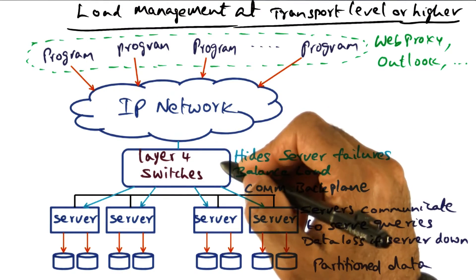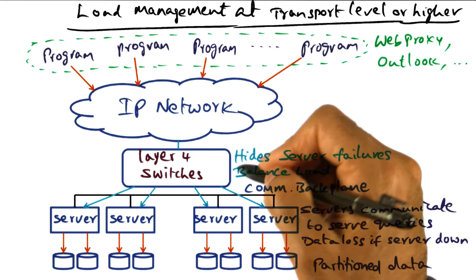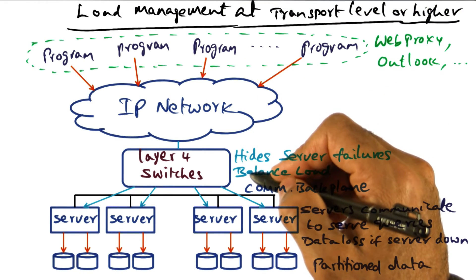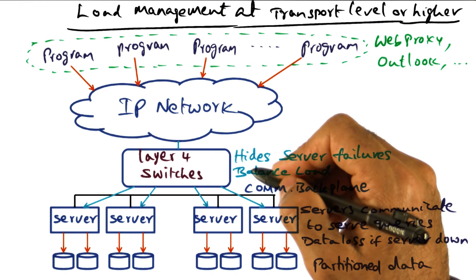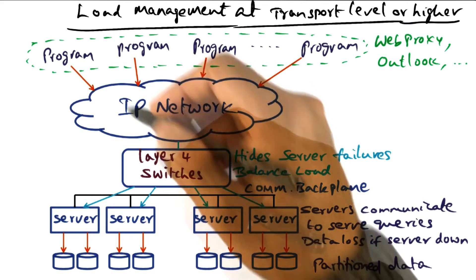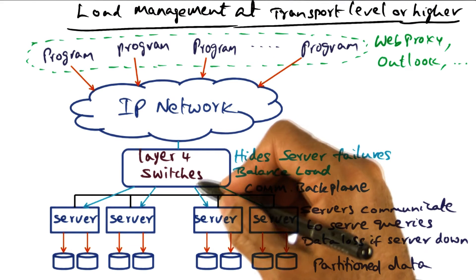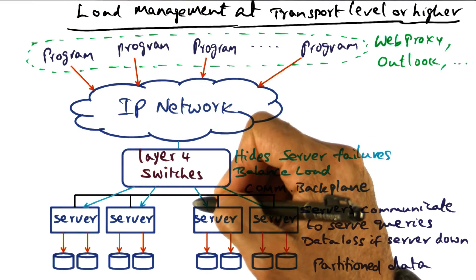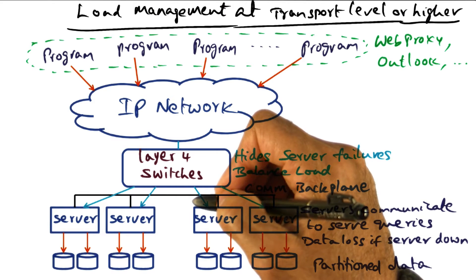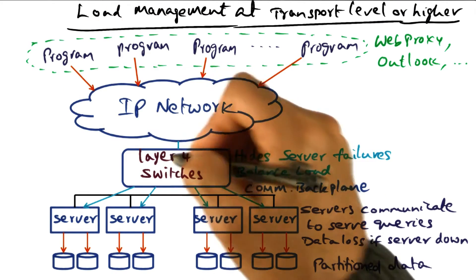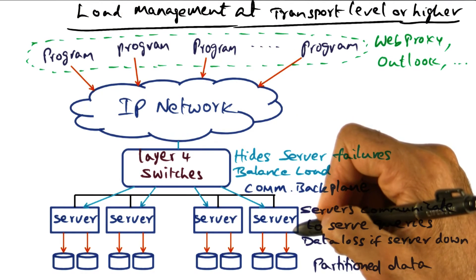It is also possible with load management at higher OSI levels to co-opt the client devices in the load management. For example, the load manager may know the device characteristics the client is using to come into the site. If it is a smartphone, it might take certain actions commensurate with the device in terms of structuring the client-server interactions.